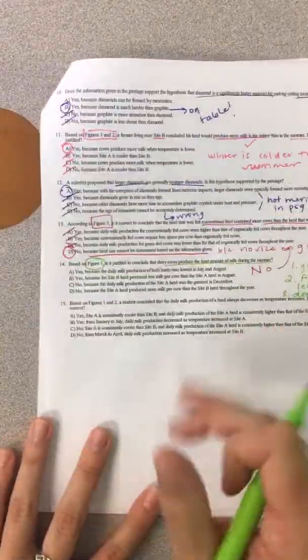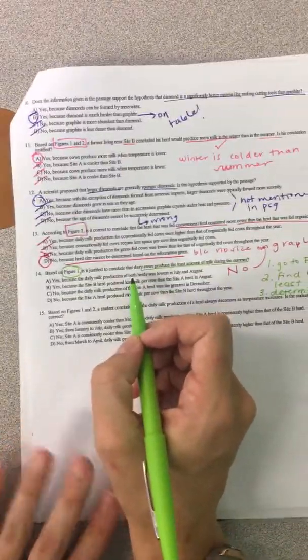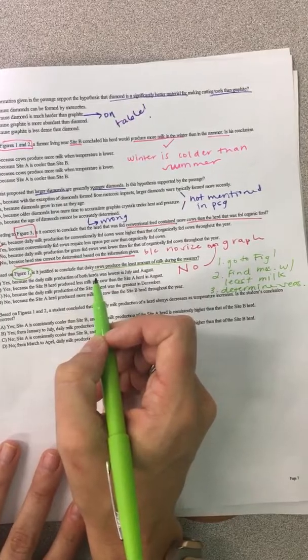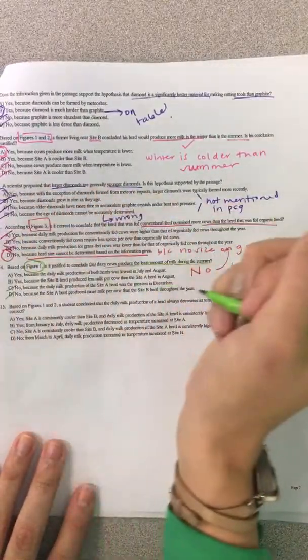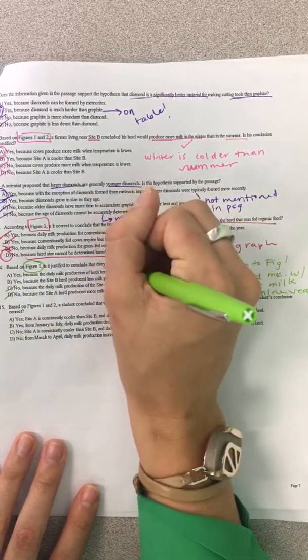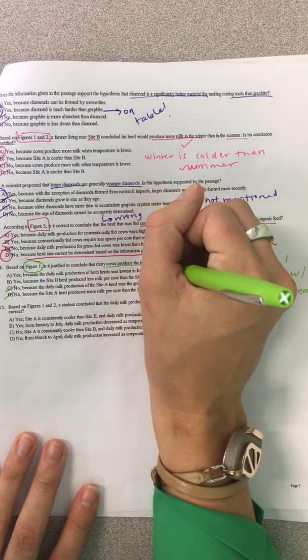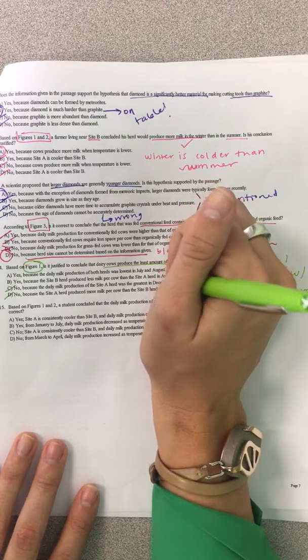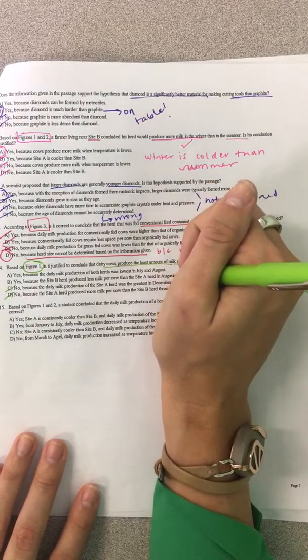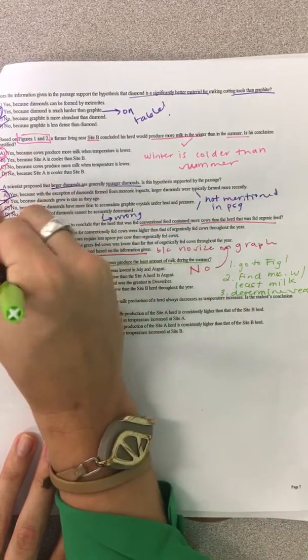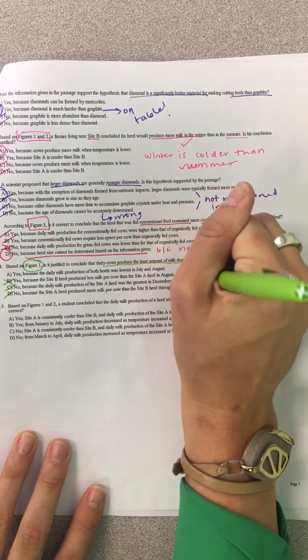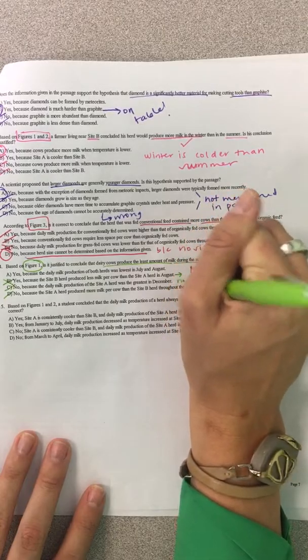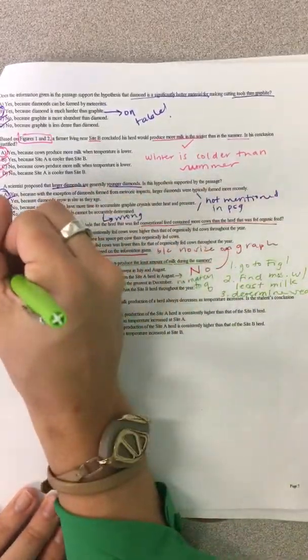Now, let's read this. Is it justified to conclude that dairy cows produce the least amount of milk during the summer? Yes. Because of our graph. Now, because daily milk production of both herds was lowest in July and August. Yes, because the site B herd produced less milk per cow. So, we don't want to compare the two sites. That's not what the question is asking. So, no match to the question. So, 14 is A.